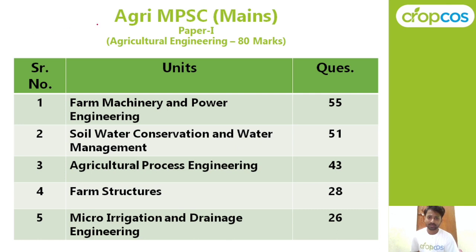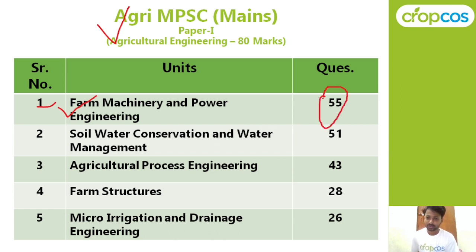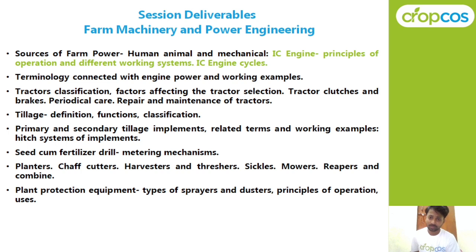This is the Agri-MPC Mank's series I am starting with you. In this exam you have 40 questions worth 80 marks for agriculture engineering, covering 5 units. The most important and most demanded unit is the first unit: Farm Machine and Power Engineering. This unit has seen 55 questions asked over 10 years from exams. The most important topic within Farm Machine and Power Engineering is the IC engine.